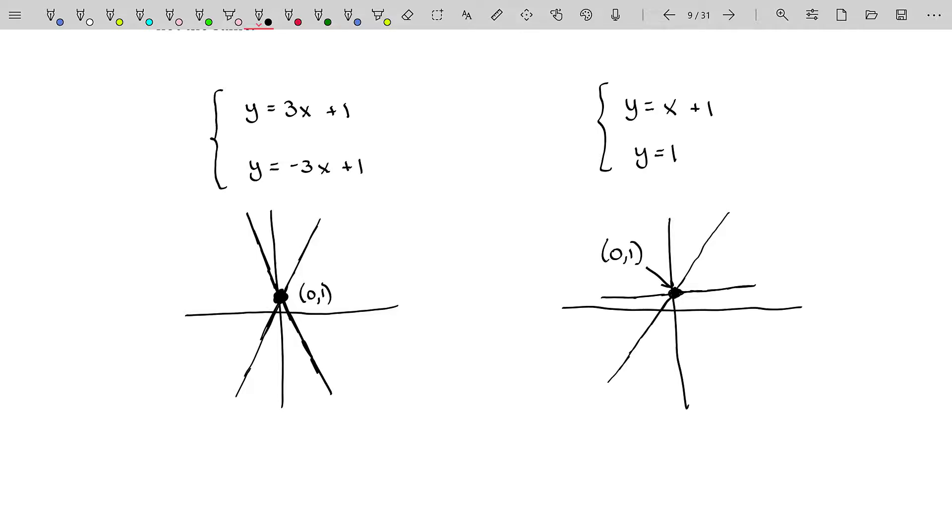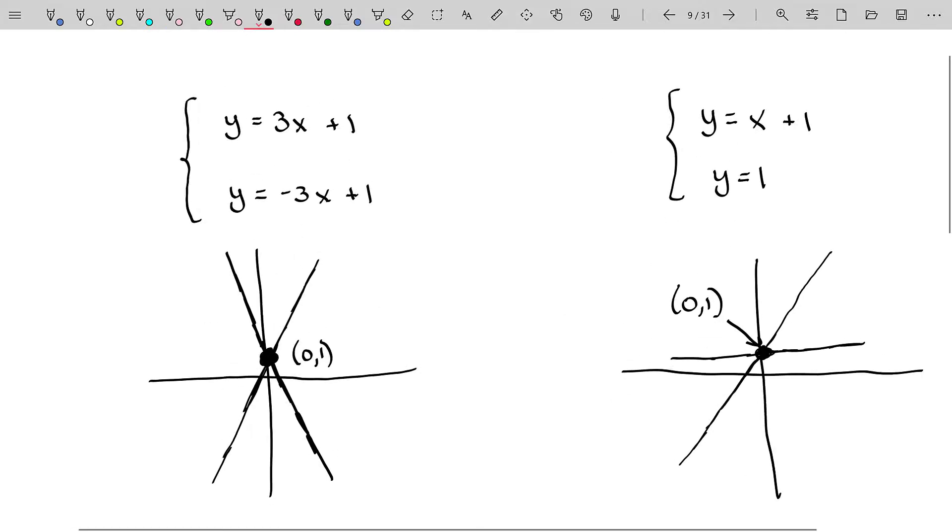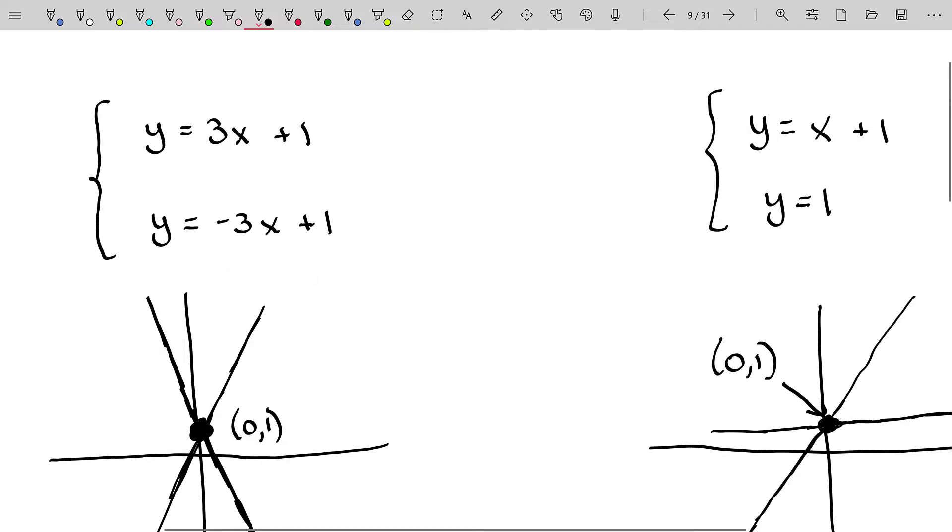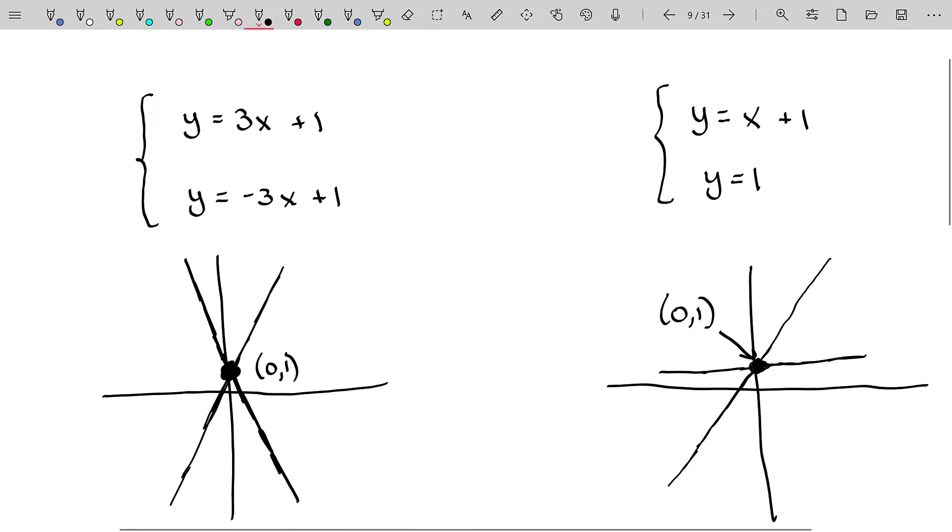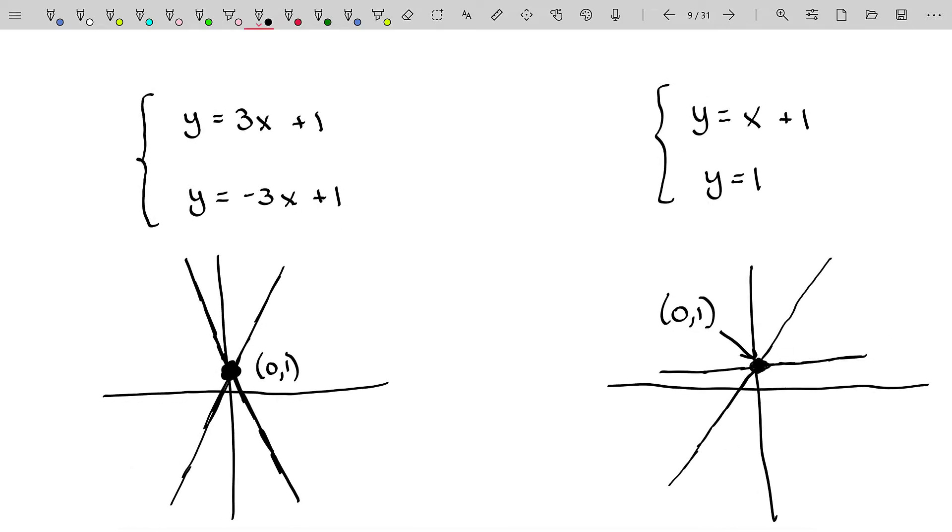So both of these systems share the same solution set. Therefore, these systems are considered to be equivalent systems, even though they don't have the same exact equations. They are equivalent systems because they have the same solution set.